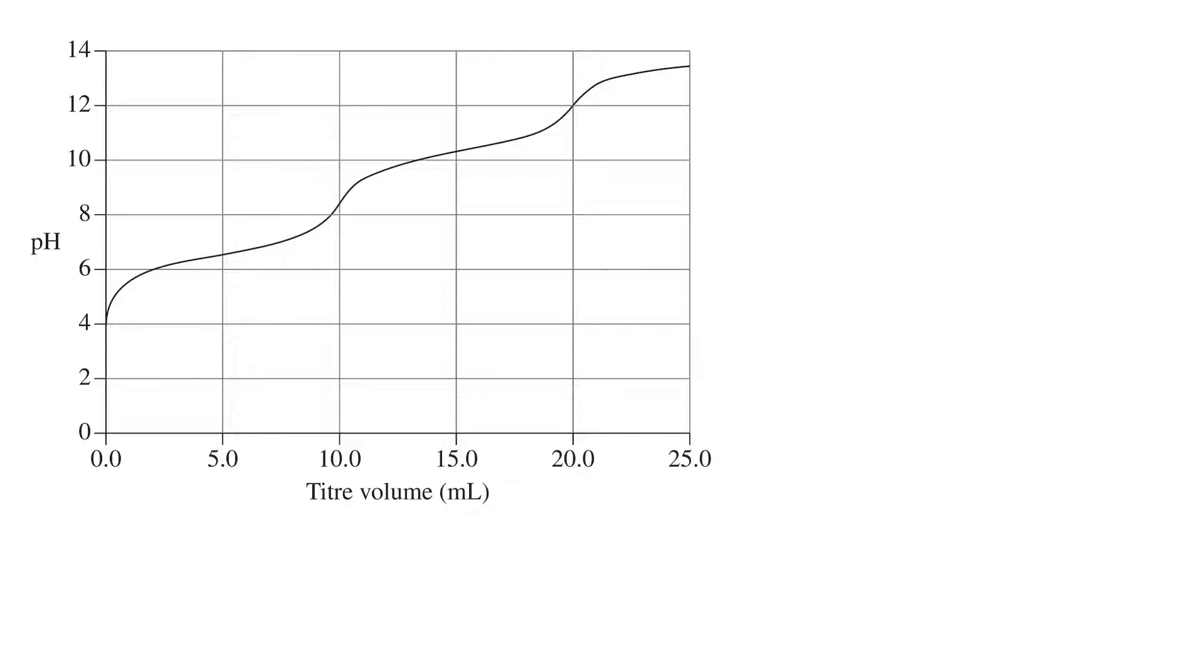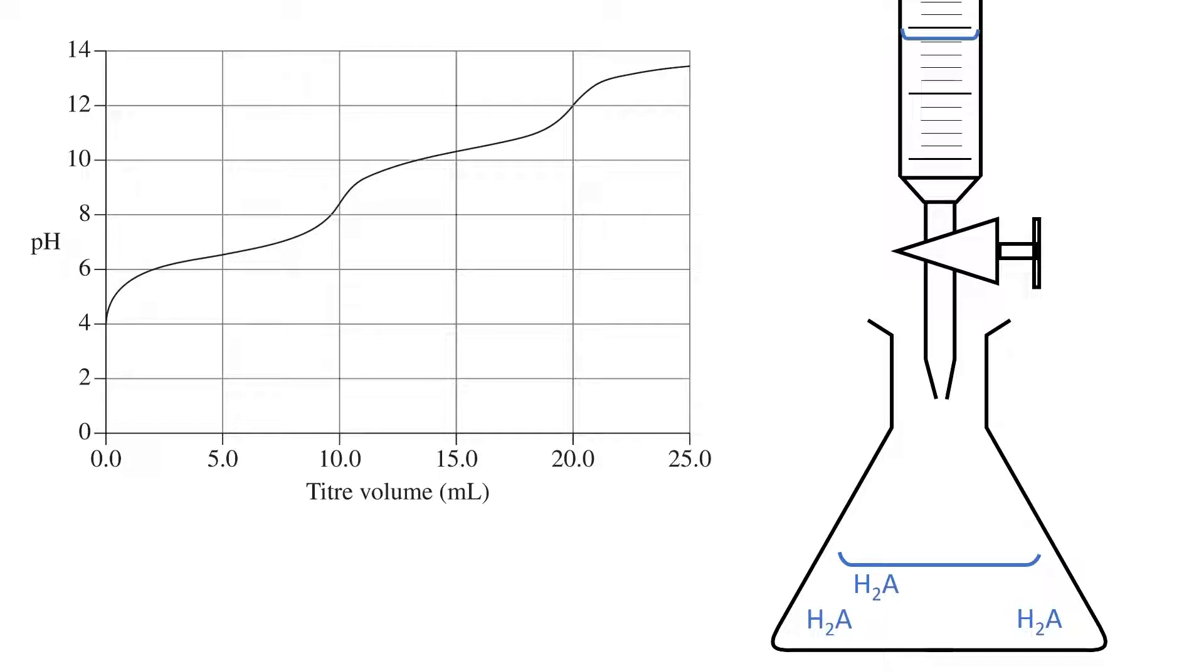To understand a bit more of what is happening in the titration curve, we can visualize the process that this curve represents. Our setup looks something like this. We have a conical flask with a solution of the diprotic acid and a burette containing the sodium hydroxide solution.